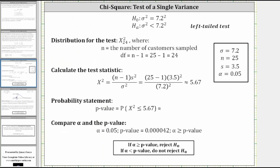The next step is to work on the distribution. For this test, it's a chi-square distribution with 24 degrees of freedom because the degrees of freedom are equal to n minus 1, which in this case is 25 minus 1, which is equal to 24. Also notice how because the alternative hypothesis is the population variance is less than the square of 7.2, this is a left-tailed test.